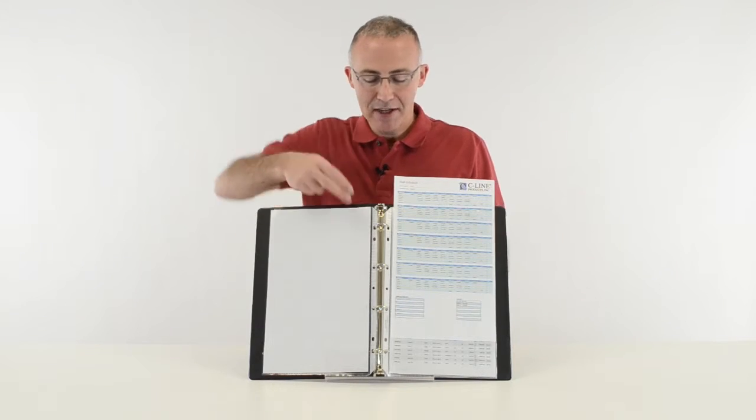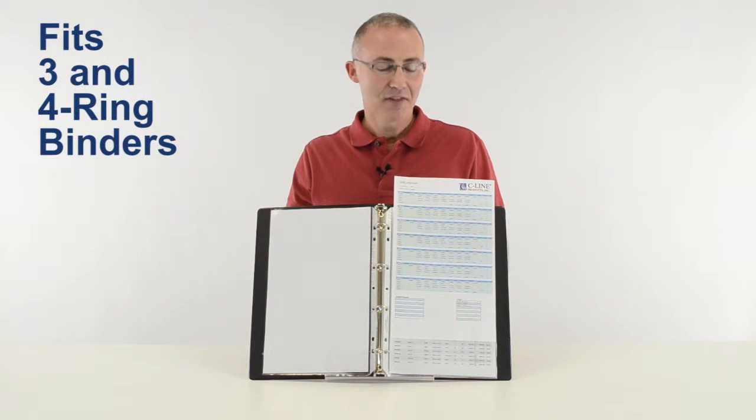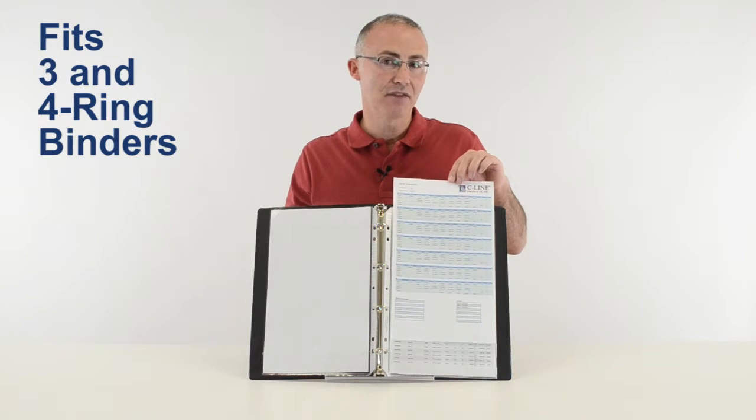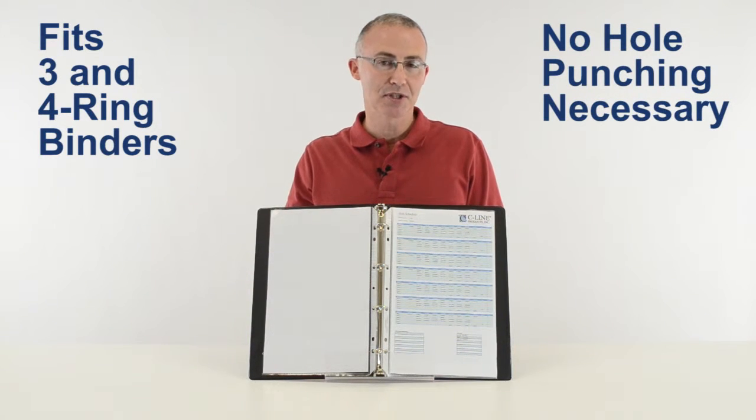Legal size sheet protectors are seven hole punched to fit into three or four ring binders. The top loading design eliminates the need for hole punching and allows you to easily add or remove pages without taking the sheet protector from the binder.